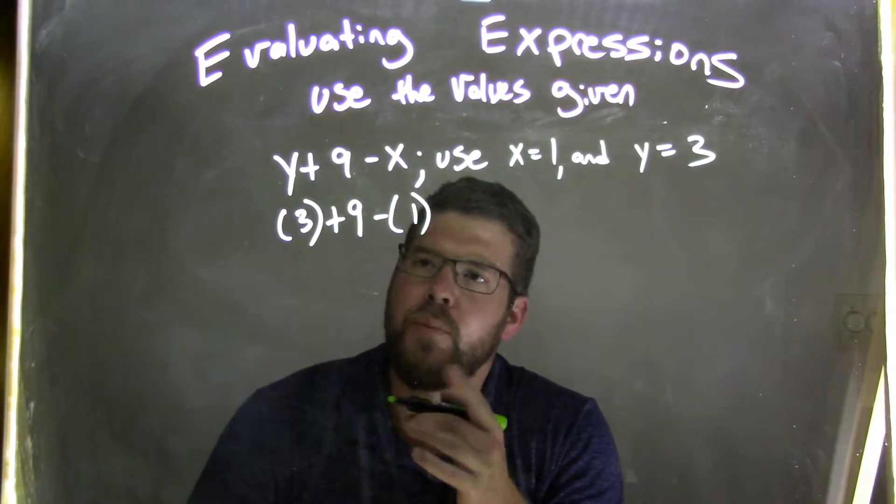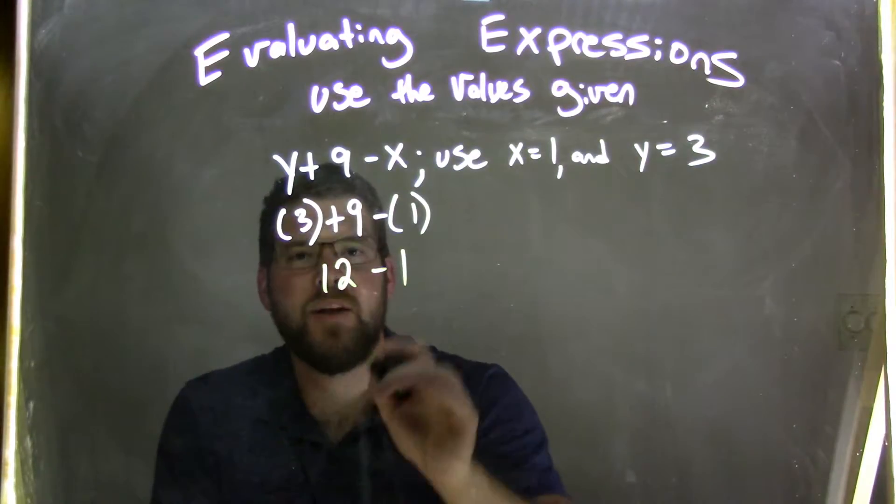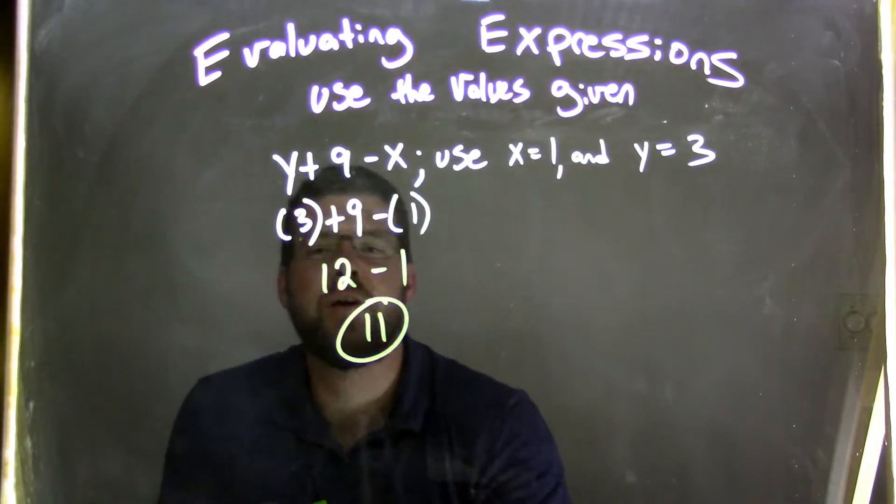So, 3 plus 9 comes first. 3 plus 9 is 12, minus 1, and 12 minus 1 is 11. And there is our final answer.